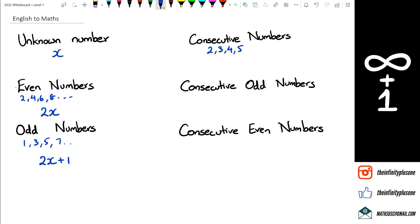So if we have consecutive numbers, what we can say is the first consecutive number is going to be x, then the next one after that is going to be x plus 1, the next one after that is going to be x plus 2, and so on.